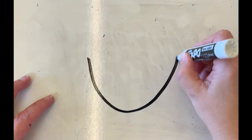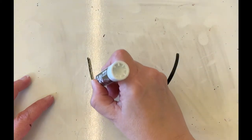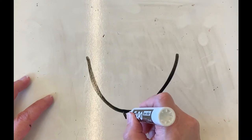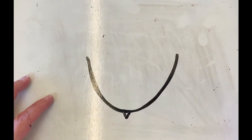You will start with the letter U, the letter U, or a smile. Then we're going to add a little triangle at the bottom.